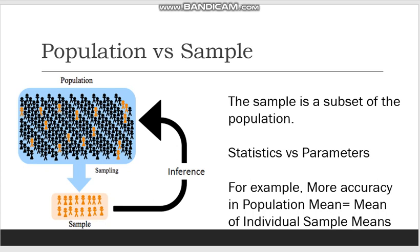Think about India — it is not easy to collect the data of 1.21 billion people. On top of that, the sample must not be biased. For example, if you wish to find out the average salary of Indians, you better make sure that your sample does not consist only of doctors. To ensure that the sample is not biased, we use sampling techniques which we will discuss in later videos.